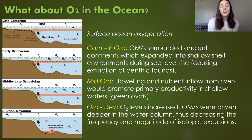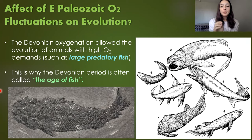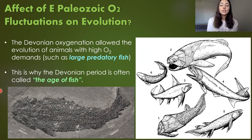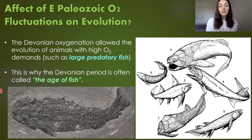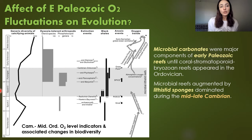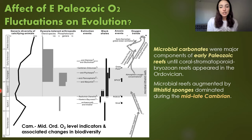All of these lines of evidence tell us that during the Devonian the ocean likely became relatively fully oxygenated, causing major advances in animal evolution. These advances include the evolution of animals with high oxygen demands such as large predatory fish — a reason why the Devonian period is often called the Age of Fish, as large fish began evolving, diversifying, and proliferating the ocean during this time. But early Paleozoic oxygen fluctuations had other biological consequences too, going back to the Cambrian and Ordovician.